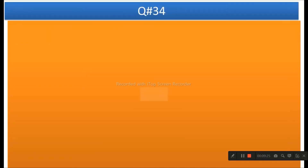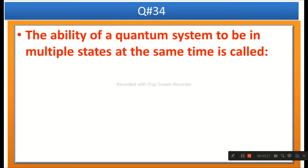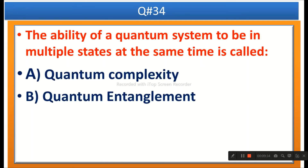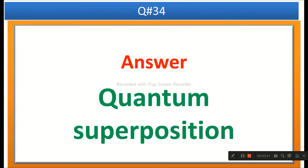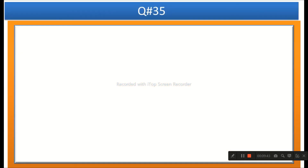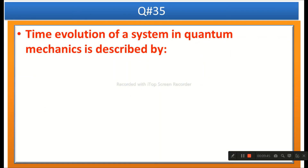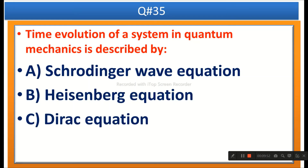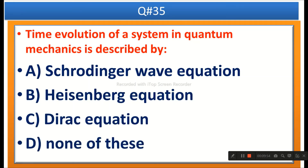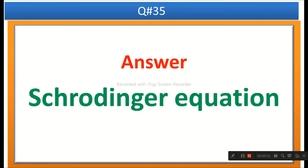The next question: The ability of a quantum system to be in multiple states at the same time is called — options are quantum complexity, quantum entanglement, quantum superposition, or none of these. The right answer is quantum superposition. The next question: Time evolution of a system in quantum mechanics is described by — options are the Schrödinger wave equation, Heisenberg equation, or Dirac equation. The right answer is the Schrödinger wave equation.